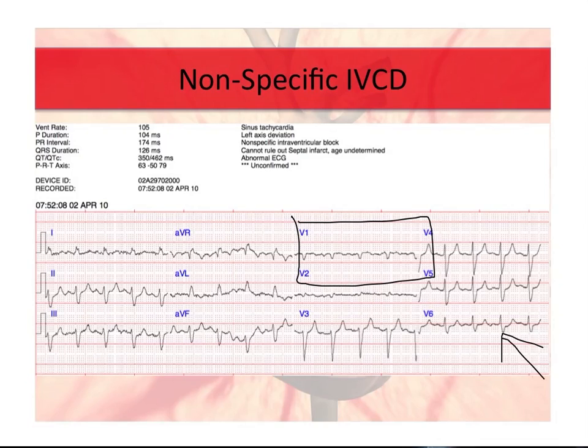For this discussion, I just wanted to mention nonspecific IVCDs. Here's an example — you have a left bundle branch block morphology in V1, but in V6 you have a right bundle branch block morphology. So it doesn't fit either one, and it's considered a nonspecific intraventricular conduction delay. The monitor has even identified it as that.